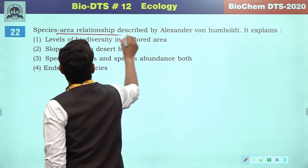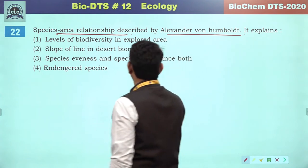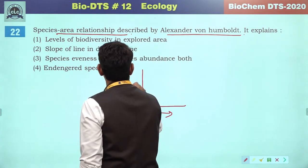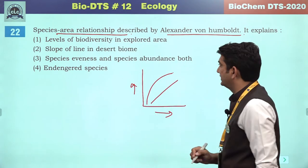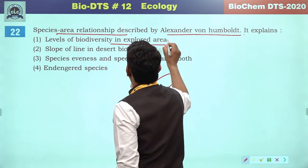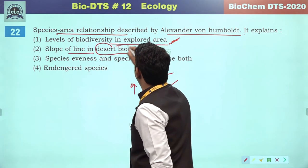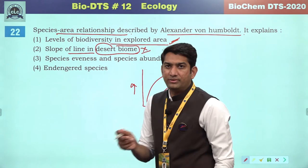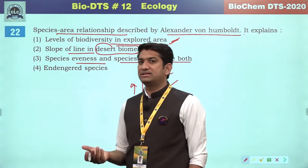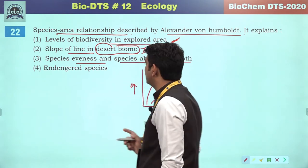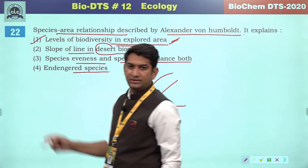Species-area relationship was described by Alexander von Humboldt. It allows us to see the level of biodiversity in an explored area. The slope of line in desert biome cannot be used as desert is least diverse. Species evenness cannot be checked — only species abundance can be seen. Endangered species cannot be concluded by this relationship. So the correct answer will be the first option.